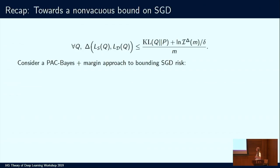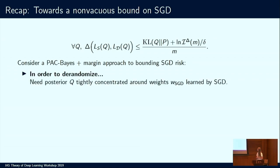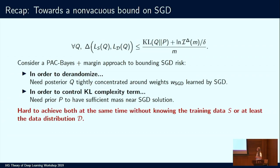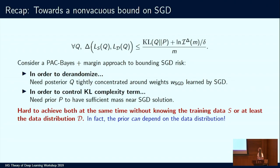Consider a PAC-Bayes plus margin approach to bounding SGD risk. In order to de-randomize, we need the posterior Q to be tightly concentrated around weights learned by stochastic gradient descent. And in order to control the KL complexity term, we need the prior P to have sufficient mass near the SGD solution. This is hard to achieve both at the same time without knowing the training data or at least the data distribution D.